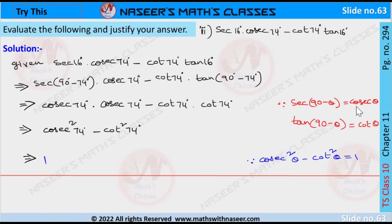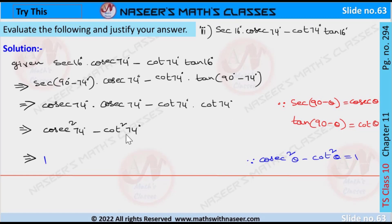Using complementary angle identities: sec(90° − θ) = cosec θ and tan(90° − θ) = cot θ. The expression becomes cosec 74° × cosec 74° − cot 74° × cot 74°, which is cosec²74° − cot²74°. This is in the form of the identity cosec²θ − cot²θ = 1.